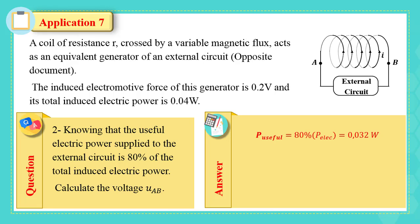P useful equals UAB multiplied by I, so UAB equals P useful over I equals 0.032 over 0.2 equals 0.16 volt.